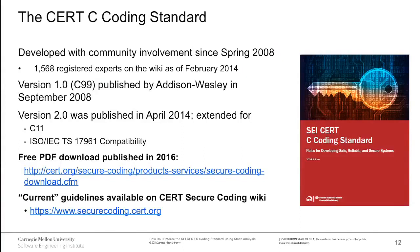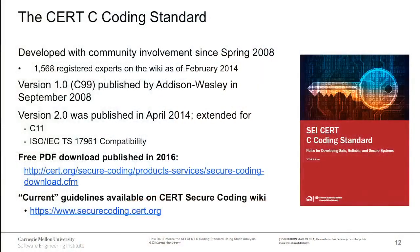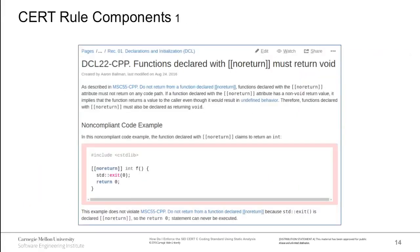To address this, CERT built the CERT C Secure Coding Standard, as well as standards for other languages. The first edition was in 2008. We're now on what could be called the third edition, available as a freely downloadable PDF published in 2016 — a stable snapshot of the rules. For a more up-to-date, bleeding-edge version, the CERT wiki is available where you can view current rules and submit comments or ideas.